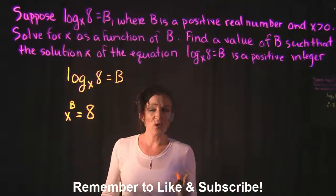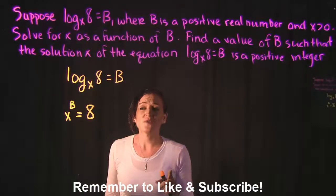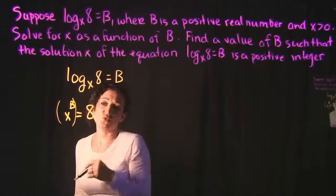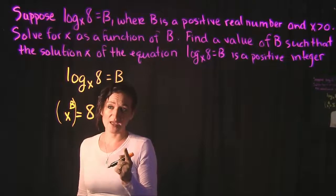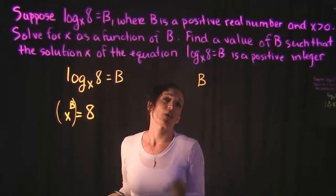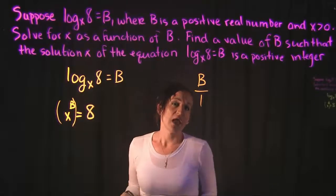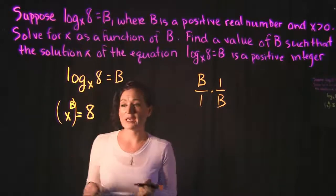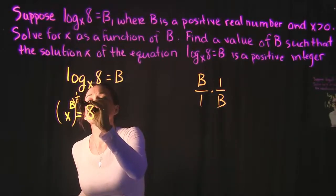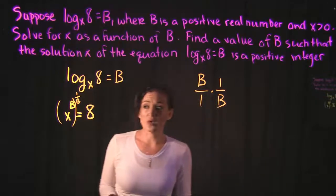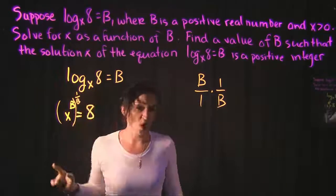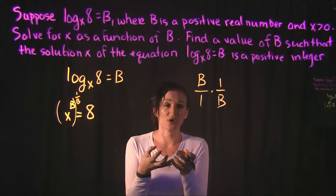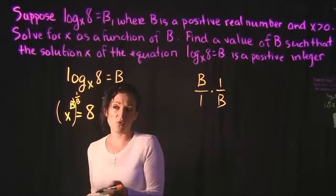Now, they want us to solve for x. We don't have it solved for x — we have it solved for x to the b. If we want to get rid of that exponent b, we need to raise it to the power of the reciprocal of b in order to cancel it out. If we write b as a fraction, that's b over 1, and the reciprocal of b is 1 over b. So we take x to the b and raise it to the 1 over b. The exponent power rule says we multiply these two together.